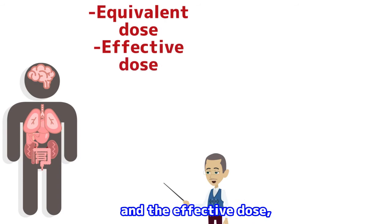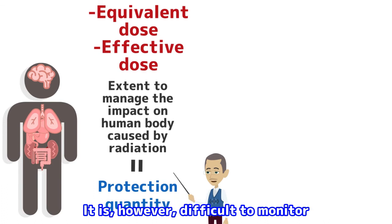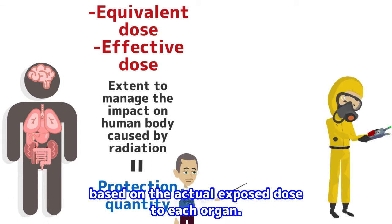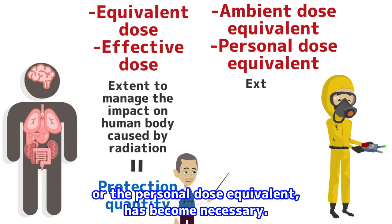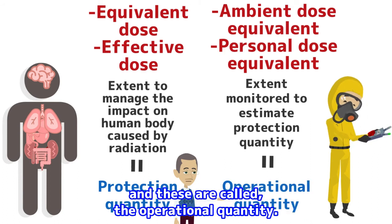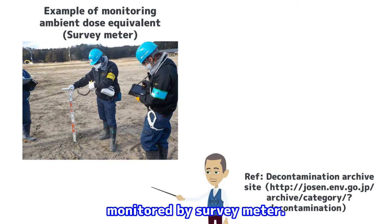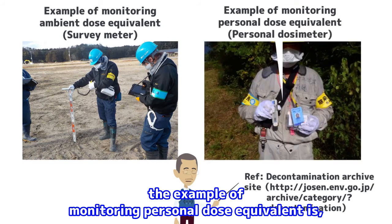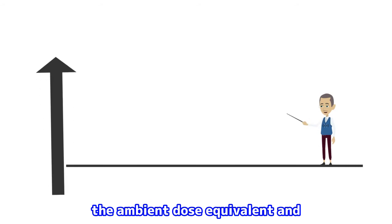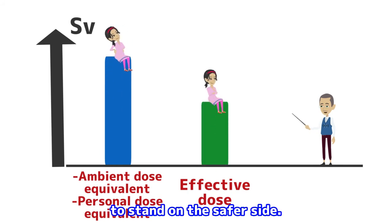That's right. The equivalent dose and the effective dose are the extent to manage the impact on human body, and these are called protection quantity. It is, however, difficult to monitor these protection quantities, because they are calculated based on the actual exposed dose to each organ. Therefore, the ambient dose equivalent or the personal dose equivalent has become necessary. These are the measurable quantities to estimate the protection quantity, and these are called the operational quantity. Specifically, the example of monitoring ambient dose equivalent is the air dose rate monitored by survey meter. In addition, the example of monitoring personal dose equivalent is the personal exposed dose monitored by personal dosimeter. Moreover, importantly, the ambient dose equivalent and personal dose equivalent are always larger than the effective dose, in order to evaluate conservatively — in other words, to stand on the safer side.